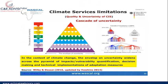In the concept of climate change, the envelope of uncertainty widens across the pyramid of impacts, vulnerability, quantification, decision making, and technical implementation of adaptation measures. This simply means that when looking at a smaller area, uncertainty is not very high. But when looking at a bigger area or far into the future, the uncertainty becomes even greater. The key challenge is making sure you are collecting climate information that is user-friendly.